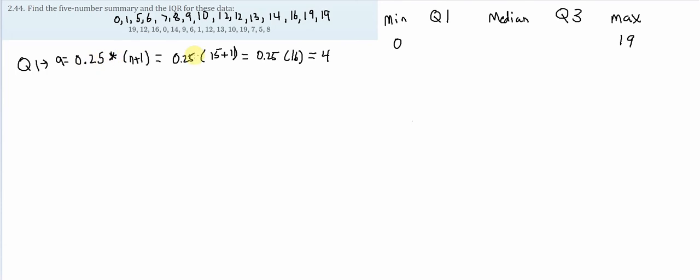So the first quartile isn't 4. What this tells us is the position of the first quartile is the fourth position. So Q1 is actually equal to the Ath X, where A is 0.25 times n plus 1. In this case, that would be X4.